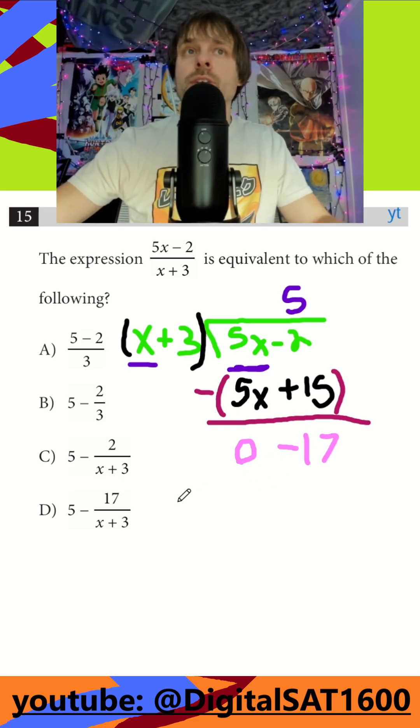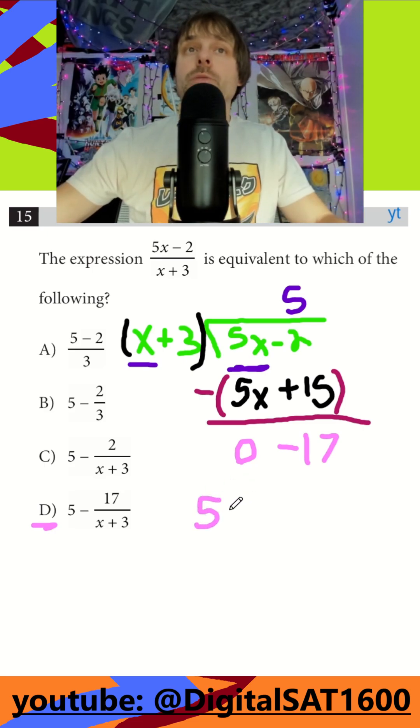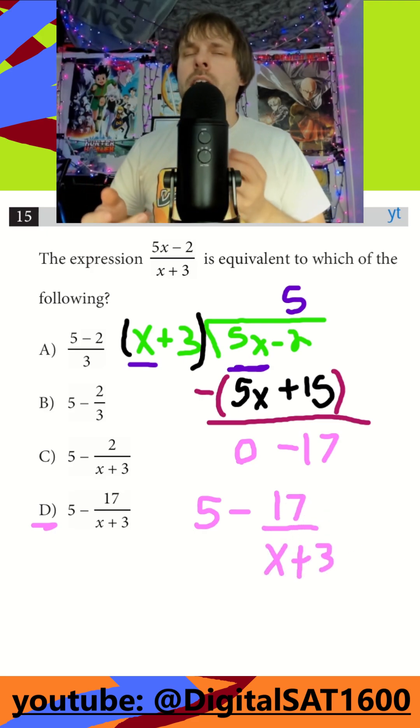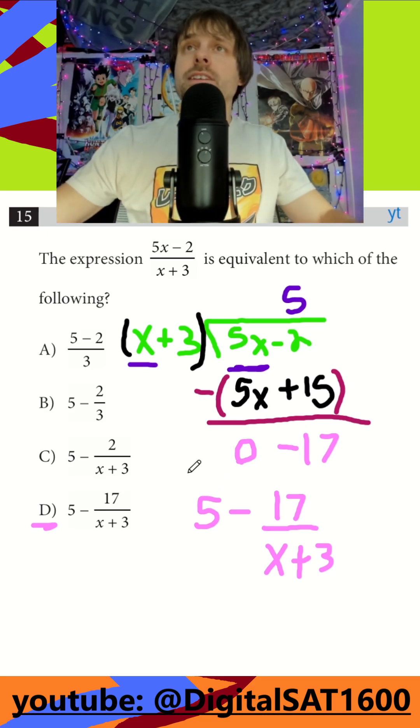And then the final way to write this, which you might already be leaning towards D because I see that negative 17, we would have a 5 as like it went all the way through, but then we would have a remainder of the 17 over our x plus 3, what we were originally dividing by. So it's really not that bad. Usually there's an extra step if there is an x squared, so I'll make sure to upload when we get to that one. So it is going to be D here.